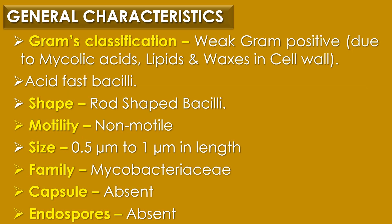First, general characteristics of Mycobacterium tuberculosis. Mycobacterium tuberculosis is a weak gram-positive bacteria due to the presence of mycolic acids, lipids and waxes in its cell wall. It is an acid-fast bacillus, rod-shaped, non-motile in nature, capsules absent, endospores absent. Its size ranges from 0.5 micrometer to 1 micrometer in length. It belongs to the family Mycobacteriaceae and is also called as tubercle bacillus.